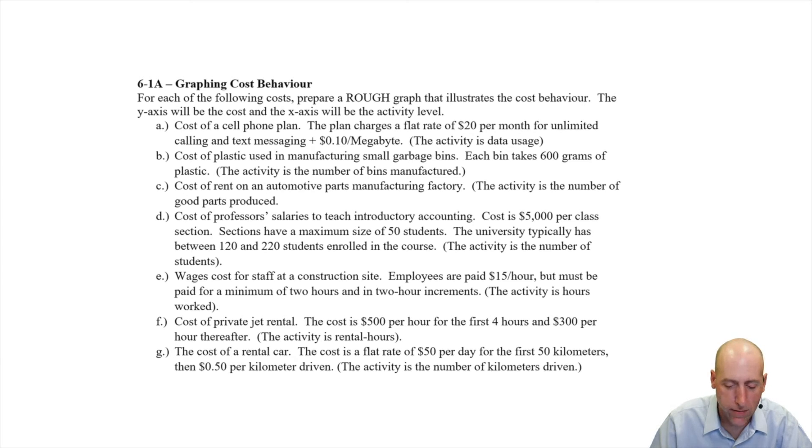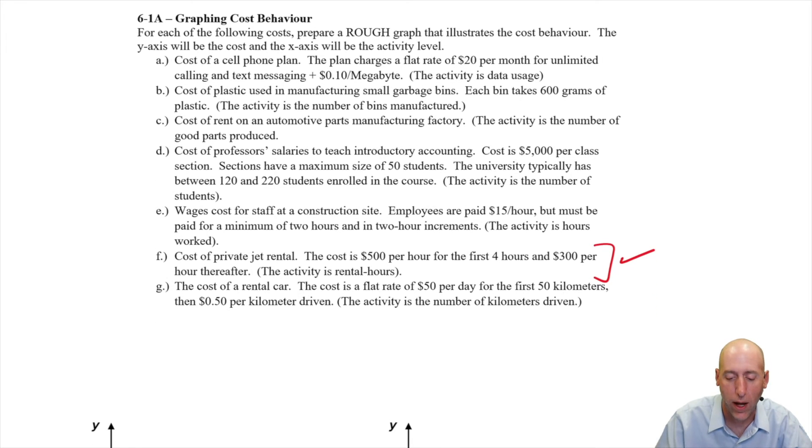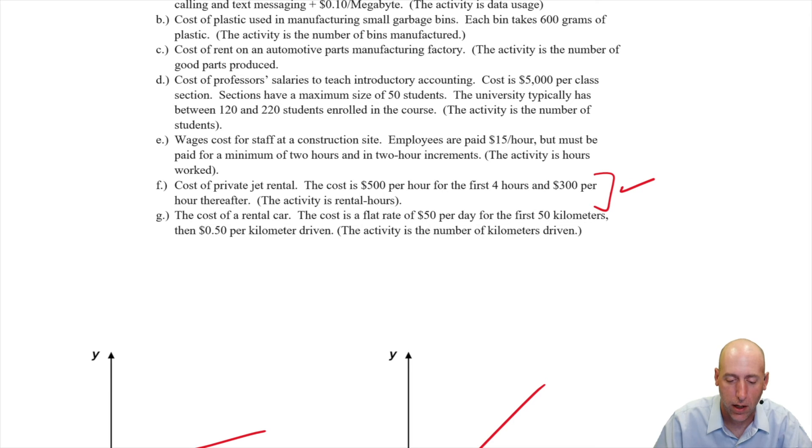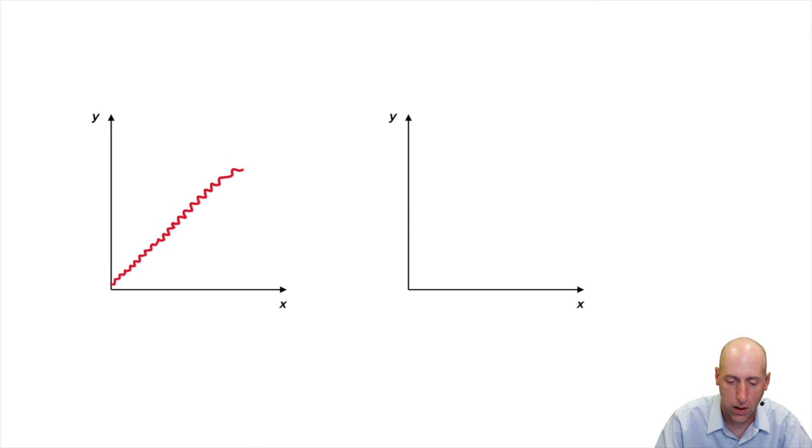F, cost of private jet fuel. The cost is $500 per hour for the first four hours and then $300 per hour thereafter. This is the one I'd say 75% of students screw this up. So hang in there with me. I want you to think about this. We're going to actually plot this on a proper graph. So the cost is $500 per hour for the first four hours and $300 per hour thereafter. All right, so we got one, two, three, four, five, six, seven, eight hours roughly.